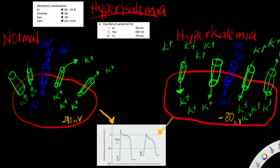There are three main effects that hyperkalemia has on the action potential of cardiac myocytes. The first one is an increase in excitability. Because in hyperkalemia there are more potassium inside the cell, the resting membrane potential becomes less negative, as seen here. It is less negative than under normal conditions, so it is closer to the threshold potential. Therefore, the cells are easier to excite and easier to depolarize.